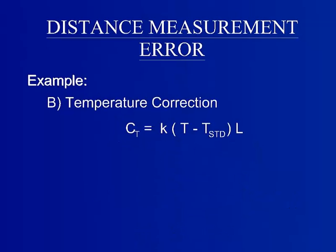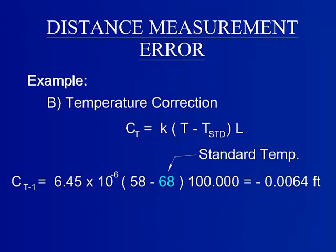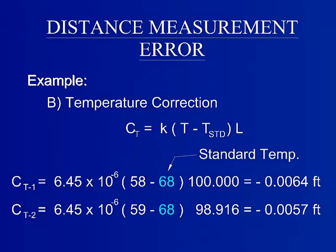Part B is temperature correction. In the United States, the temperature at which steel tape is standardized is 68 degrees Fahrenheit. In this example, the two measurements had different temperatures at the exact time of measurement and must be calculated separately. The combined error resulting from the measurements is negative 0.0121 feet.